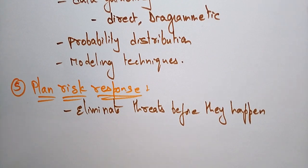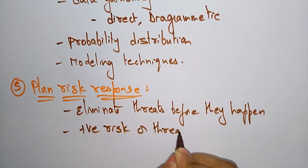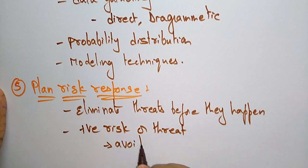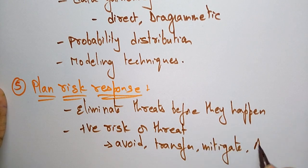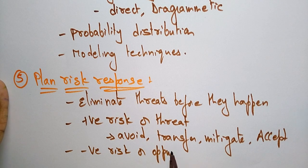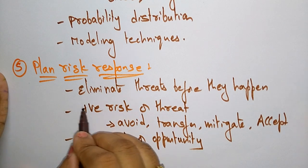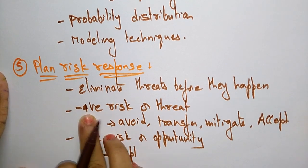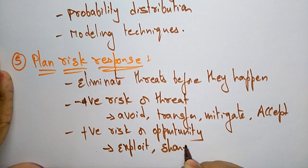For a positive risk or threat, the strategies are: avoid, transfer, mitigate, or accept. For a negative risk or opportunity, the strategies are: exploit, share, and enhance. So plan risk response covers both types — threats are handled through avoidance or mitigation, while opportunities are handled through exploiting or sharing them.